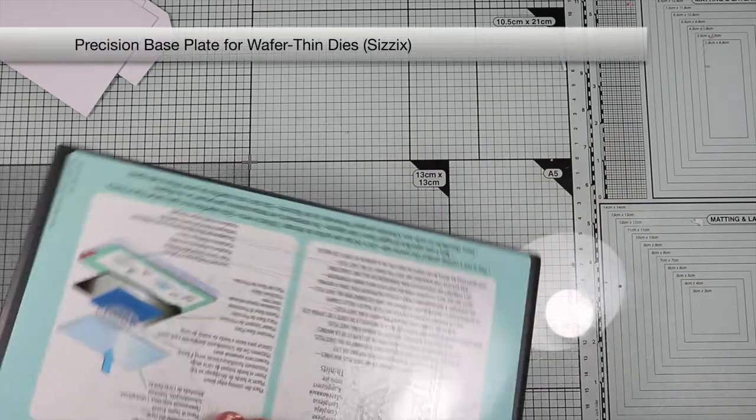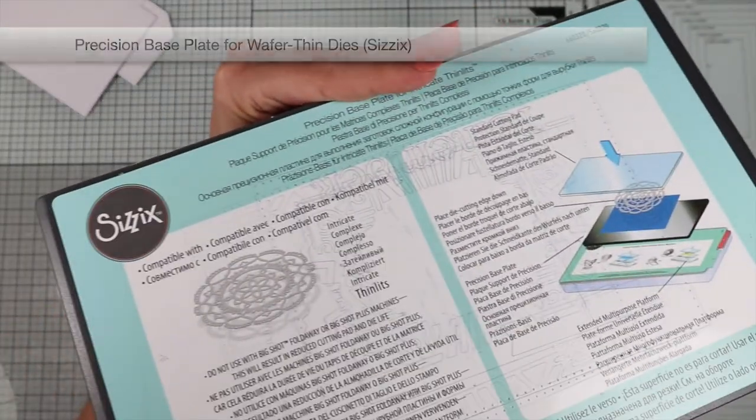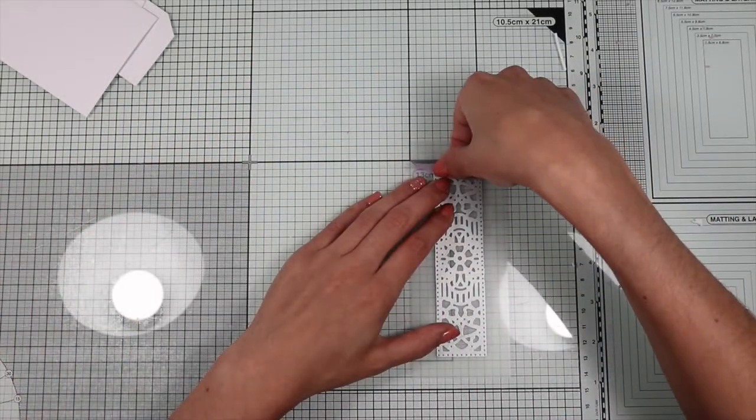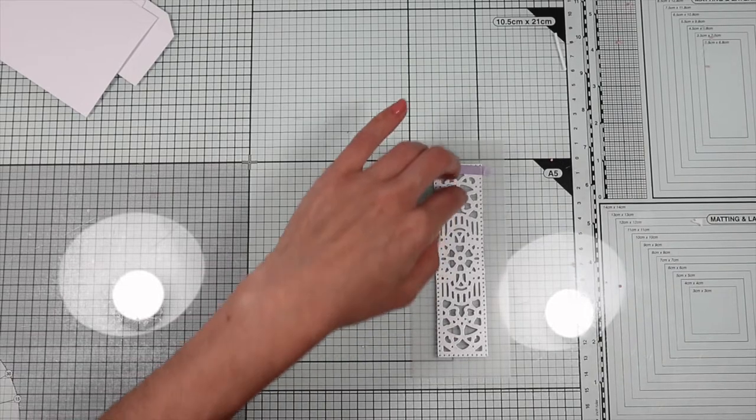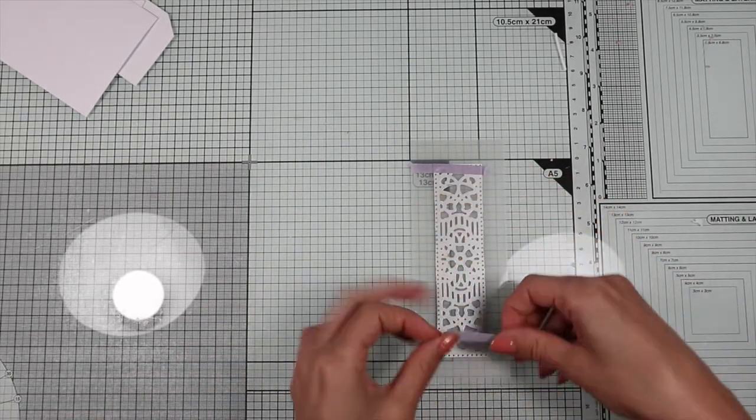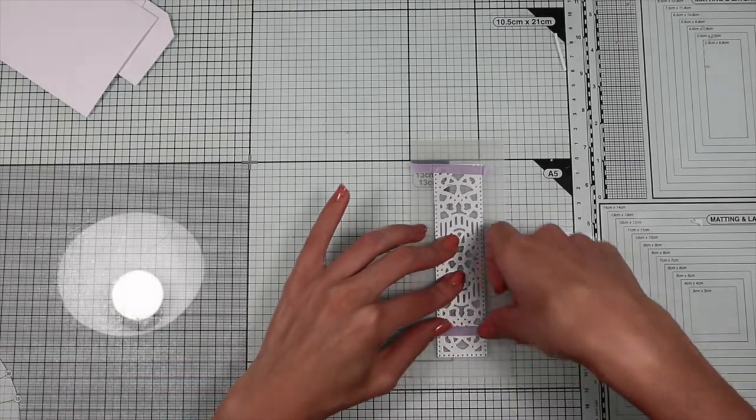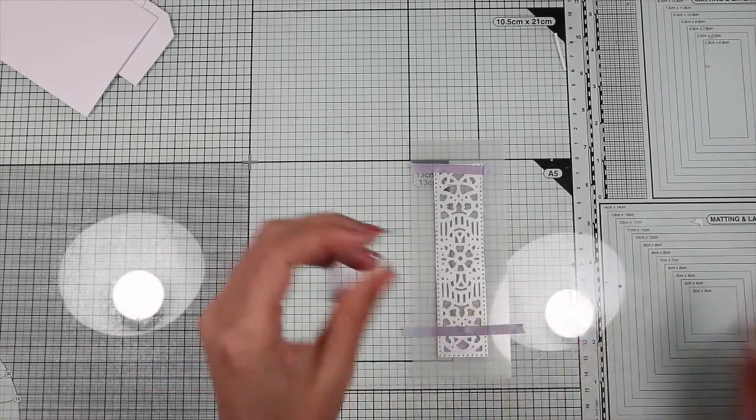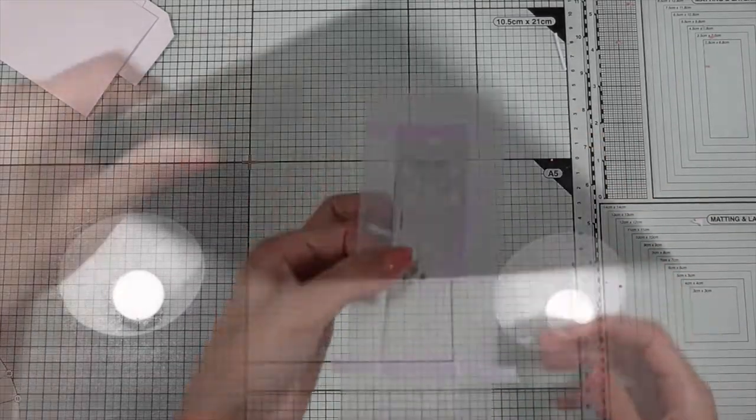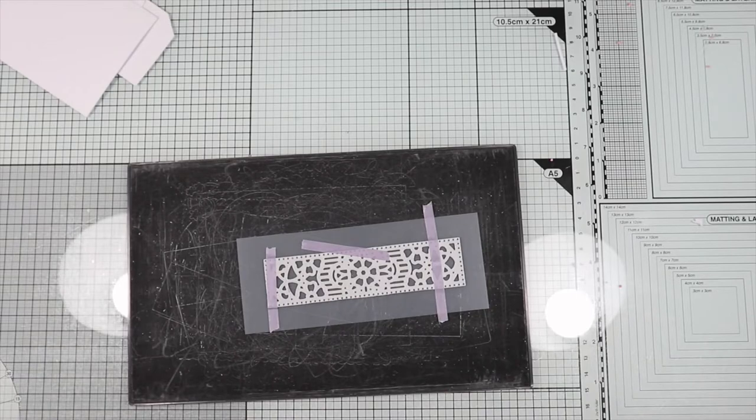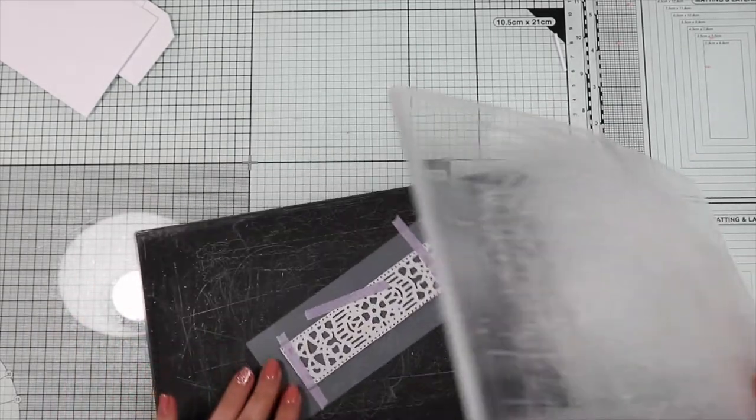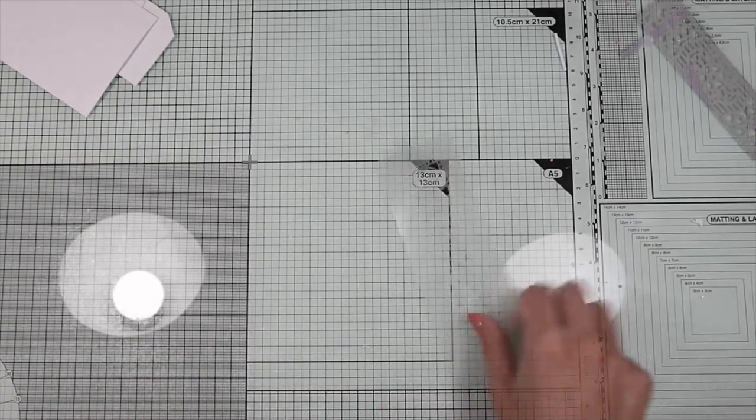To die-cut Mylar and acetate, I use the Sizzix precision metal plate. This is because using normal plates, most of the time the acetate is not die-cut well. If you don't have this plate, I can suggest you increase the thickness of your sandwich by adding some cardstock. Try to see what thickness ensures you the complete cut of the acetate.